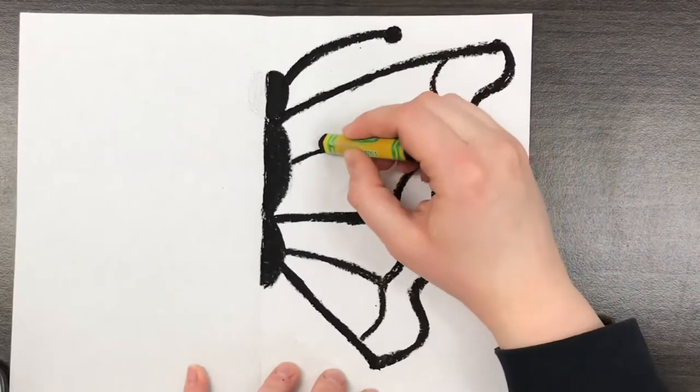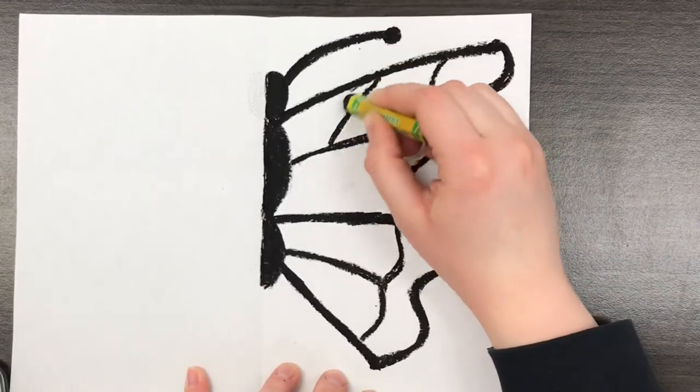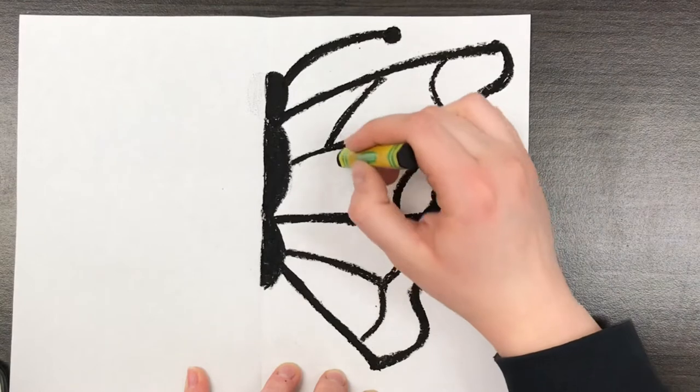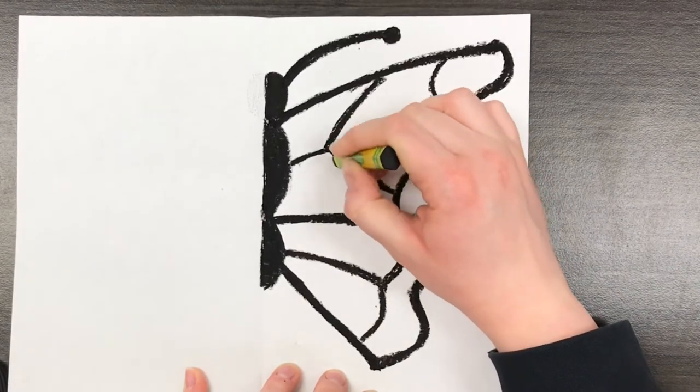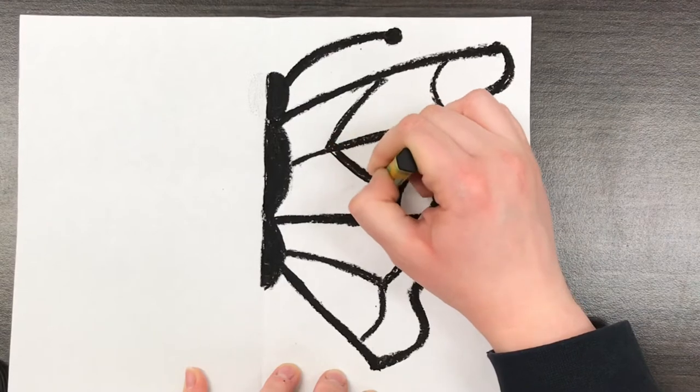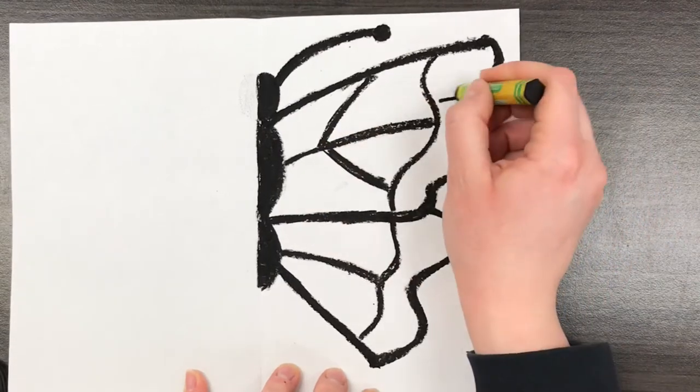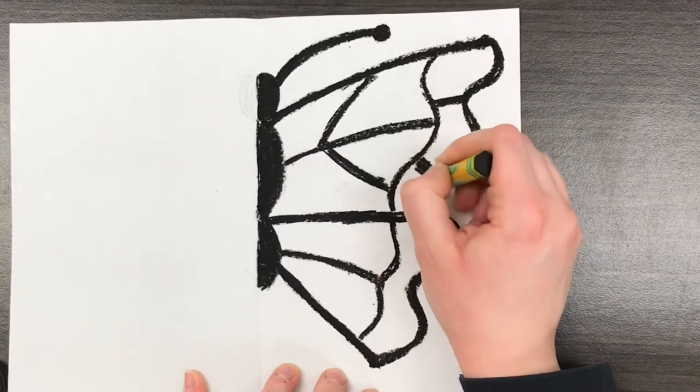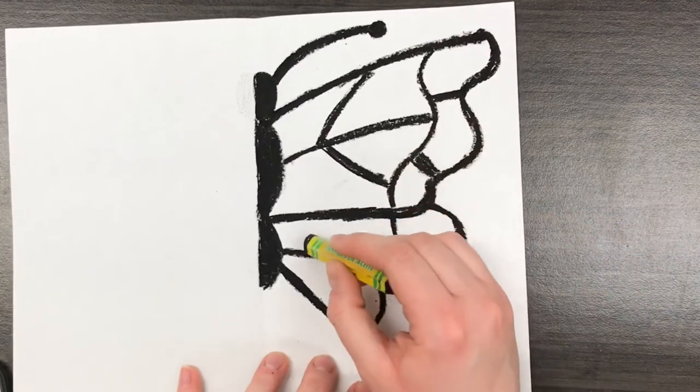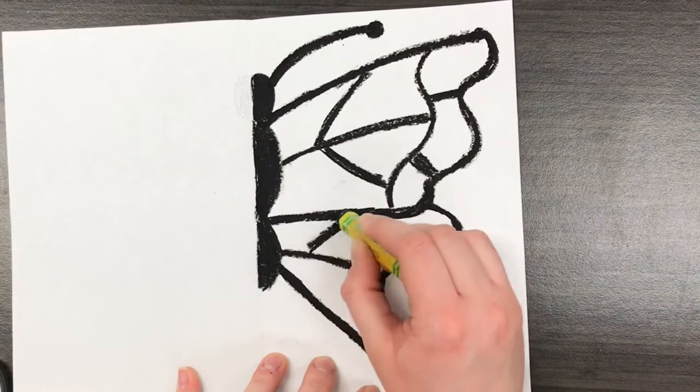So monarch butterflies, they have these really thick black lines on their wings, and so that's what we're creating here. Again, breaking up the wing with some diagonal lines, and then some lines at the edge. Again, you want to make sure your lines are really thick so that they print really nicely on the other side of the paper.